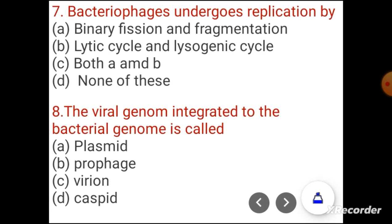Question 7. Bacteriophages undergo replication by: binary fission and fragmentation, lytic cycle and lysogenic cycle, both A and B, or none of these. The correct answer is lytic cycle and lysogenic cycle.